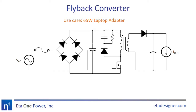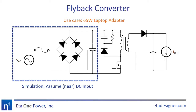The AC line input is rectified using a bridge rectifier, which charges a large bulk capacitor. In the non-PFC case, the flyback converter essentially operates as a DC-to-DC converter from this bulk capacitor voltage. In our analysis, we replace the input rectifier with a DC source ranging from 90 volts to 350 volts. This will make our simulation faster.